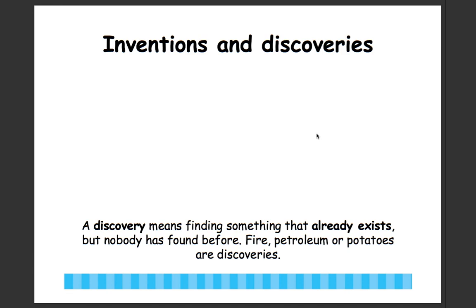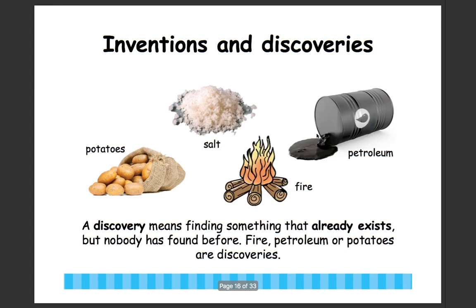A discovery means finding something that already exists, but that nobody has found before. Fire, petroleum, and potatoes are all discoveries — things that existed in the world but people didn't know about until someone found them. For example, a farmer was working in his field one day and dug up a potato. He didn't create the potato, but he found it. So a discovery is when you find something that's already there.